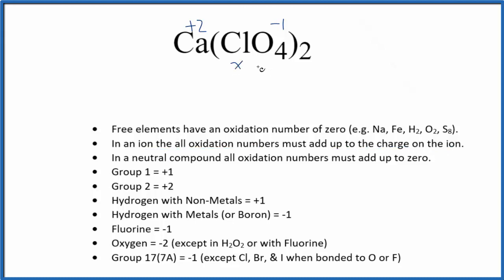Oxygen, that's going to be negative two, with a few exceptions. For example, when it's in peroxides or bonded to fluorine. So we could say that x, that's the chlorine, minus two for the oxygen, and we have four of those equals the charge on the ion, which is that one minus.